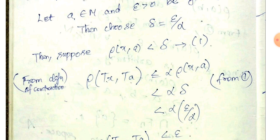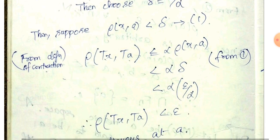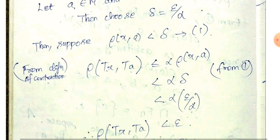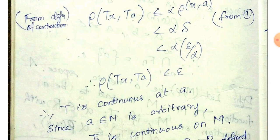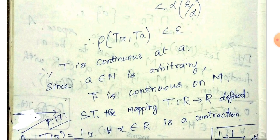From this condition, ρ(Tx, Ta) is less than α · ρ(x, a). From equation 1 and δ, we get less than α · δ, and then α cancels. Then ρ(Tx, Ta) < ε.